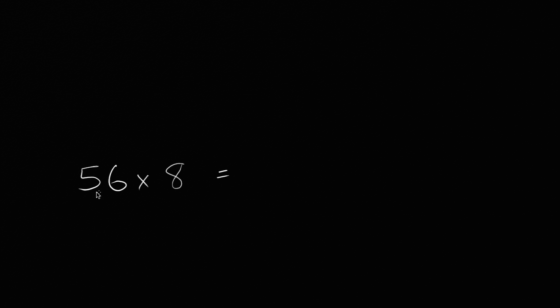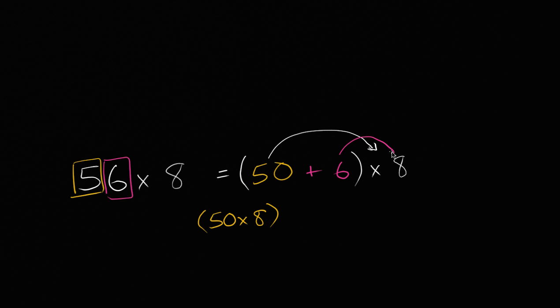And there is a bunch of different ways that you could do it. You could say that 56, this is the same thing as 50, 5 tens, that's 50, plus 6 ones, so 50 plus 6, and all of that times 8. And then you could distribute the 8, and you could say this is going to be 50 times 8, plus 6 times 8.